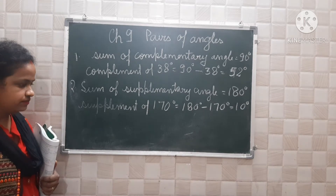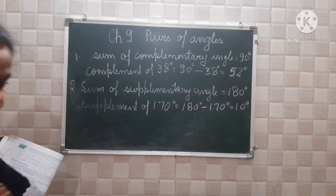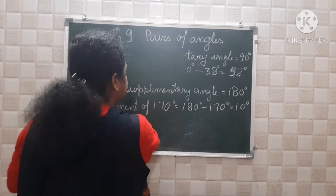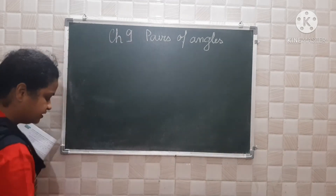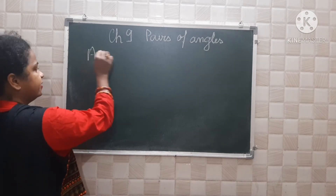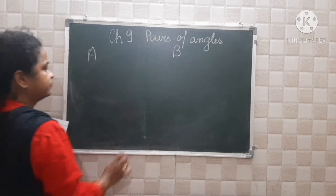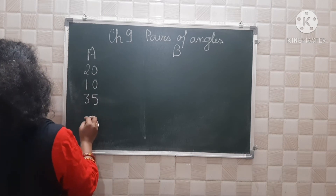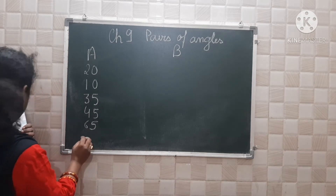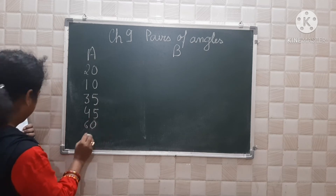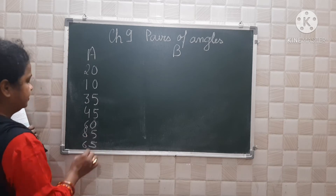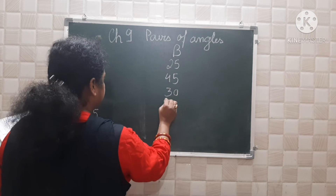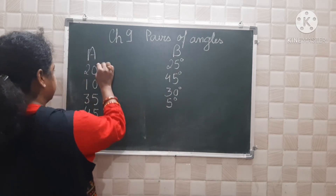Now see the next question, question number 3. There are two groups, A and B. This is a small type of matching one. Group A has: 20, 10, 35 degrees, 45, 65, 45, 60, 85, and 65. Group B has: 25, 45, 45, 35 — all are degrees, so don't forget to put the degree symbol.